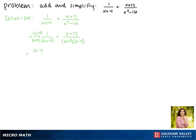Now x minus 4 times 1 is just x minus 4, and in the denominator we have x plus 4 times x minus 4. Our second term stays the same: x plus 12 over x plus 4 times x minus 4.